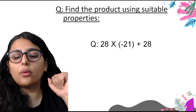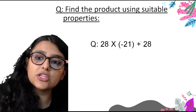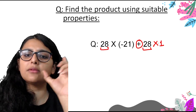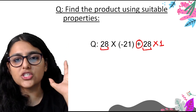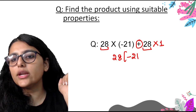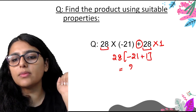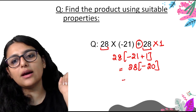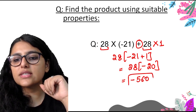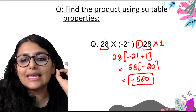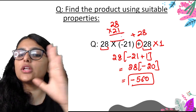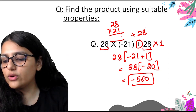Find the product using suitable properties: 28 into minus 21 plus 28 into 1. Here 28 is common in both terms. Taking 28 common: 28 into (minus 21 plus 1) equals 28 into minus 20, which equals minus 560. The answer is minus 560 — in just one step. Without the distributive property, you would have had to multiply 28 by 21, then add 28, making far more steps.